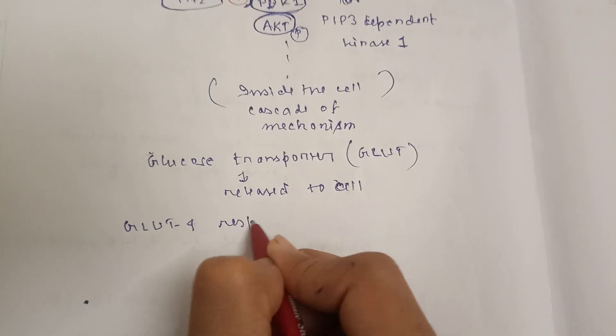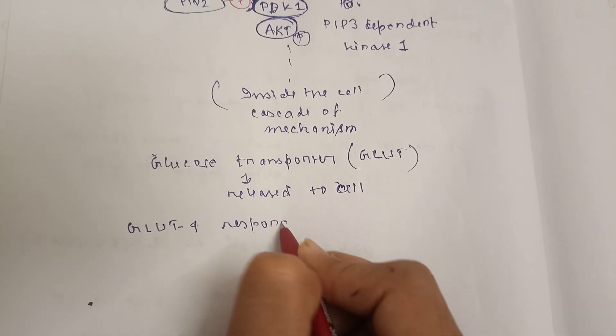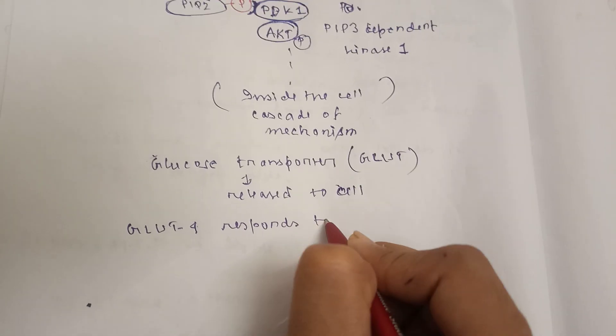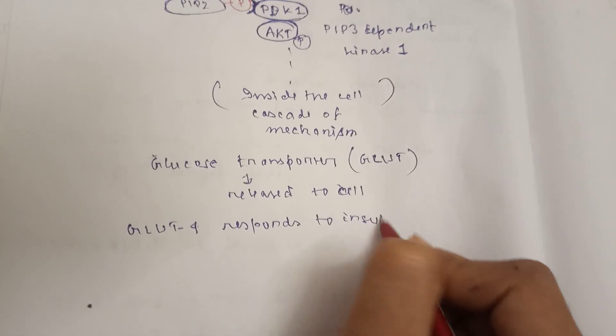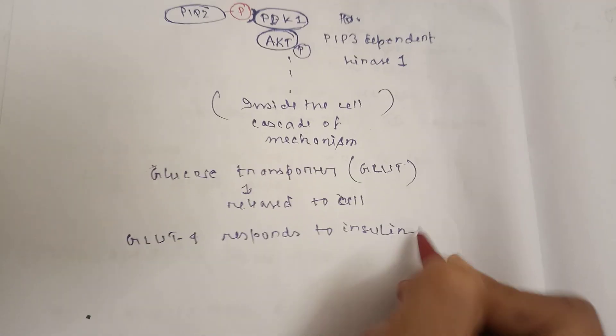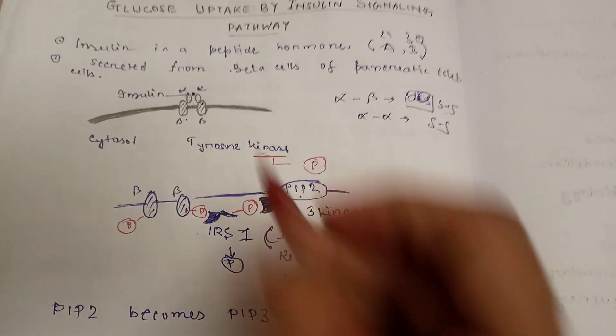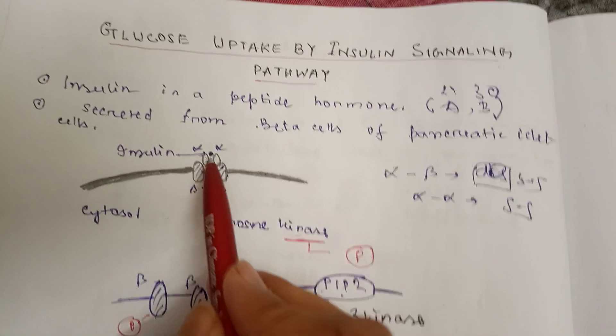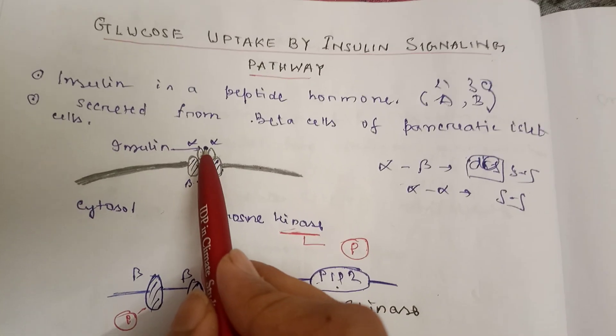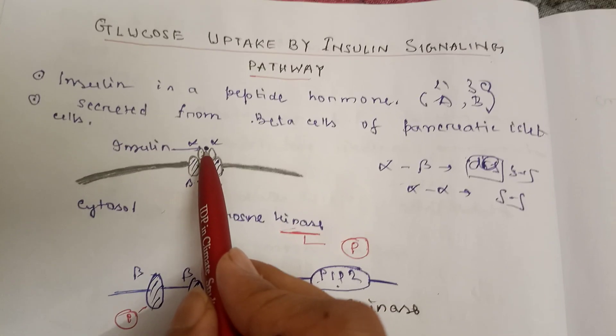There are many types of GLUTs — GLUT1, GLUT2, GLUT3, and GLUT4 — but GLUT4 is the one that specifically responds to insulin.